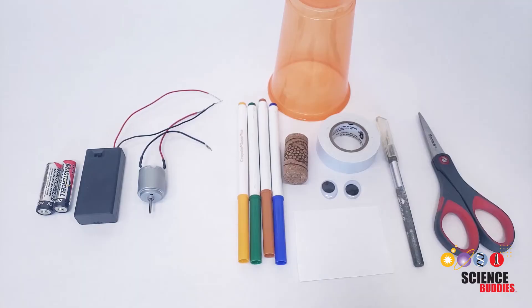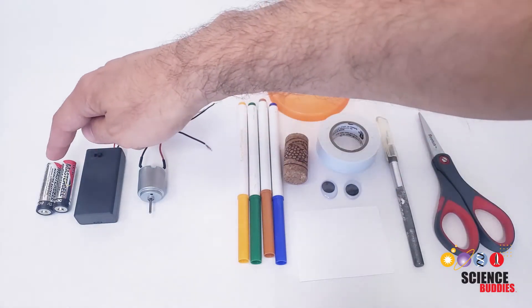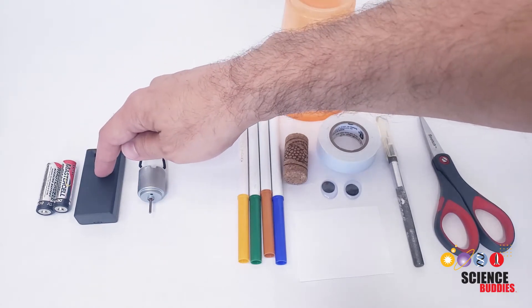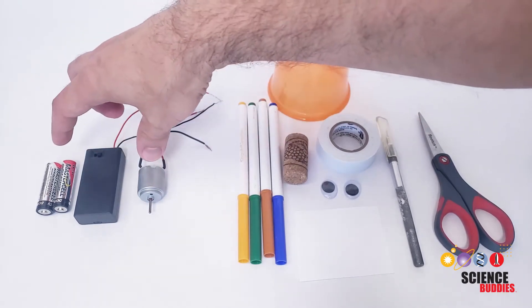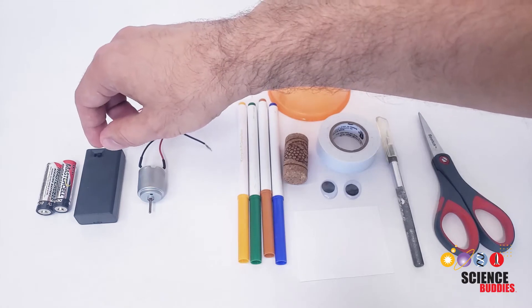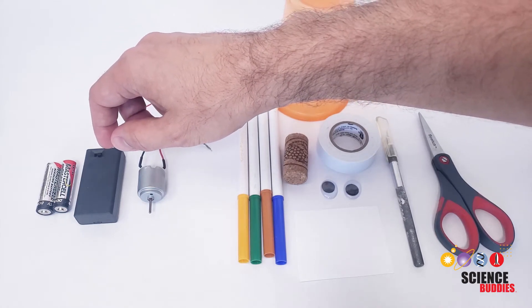Here are the supplies you'll need to make your ArtBot. You will need two AA batteries, a battery holder, and a small DC motor. These electronic parts are available in a kit that you can find linked in the description of this video.